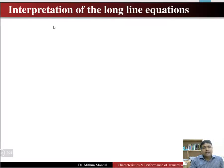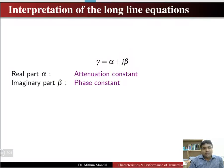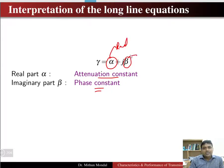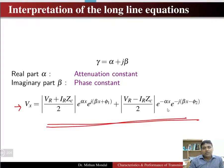Now let us interpret the long line equations. We have obtained the ABCD parameters and related sending end quantities with receiving end quantities. We know γ = α + jβ, where α is the attenuation constant (the real part) and β is the phase constant (the imaginary part) of the long line. The voltage vx can be written by substituting γ = α + jβ.